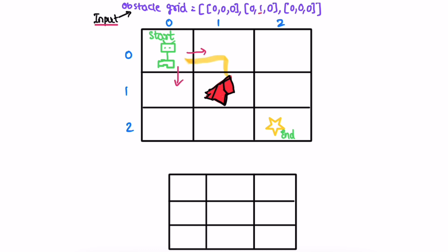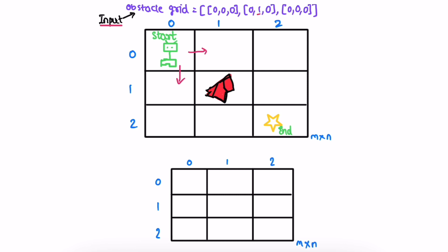To solve the question we have to create a DP array of the same length as the obstacle grid — m by n, where m is the number of rows and n is the number of columns. The number of ways you can reach the first cell is always one, so dp[0][0] starts with one. The number of ways to reach the end of the first row will also be one because you can only reach each cell from the left. Similarly, the number of ways to reach cells in the first column is also one because the robot can't move left — it can only come from above.